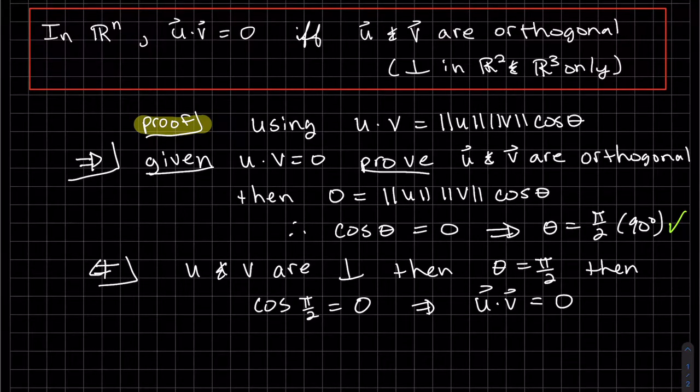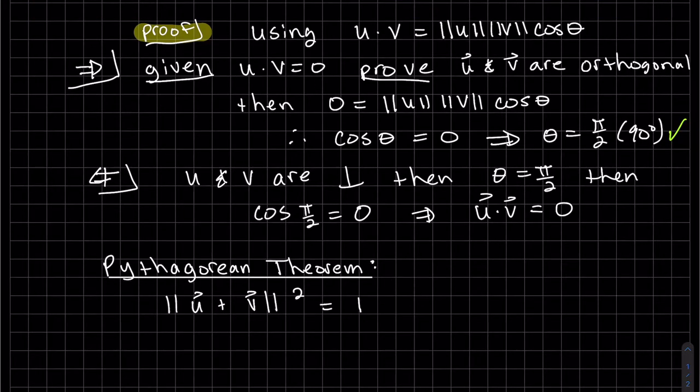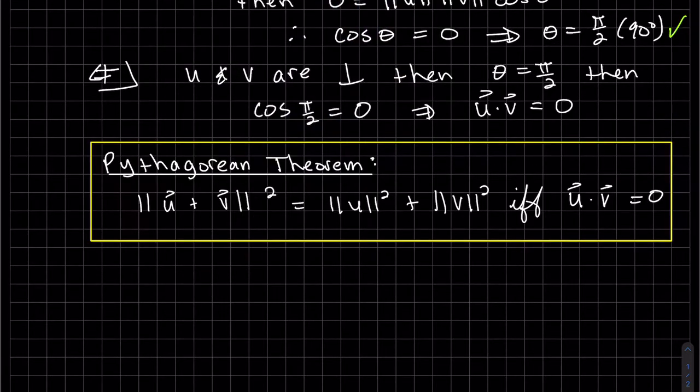Okay, pretty much the same proof, just going backwards. So normally we'll have a middle term here, the 2u dot v. So basically, this is true if the dot product's zero. And if we have this, then the dot product is zero. So it works both ways.